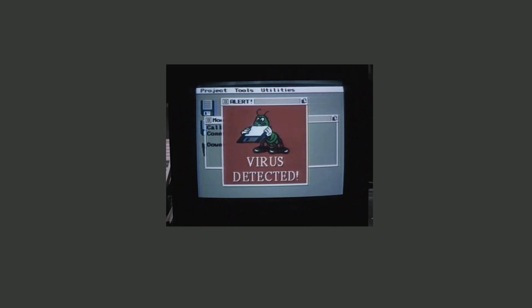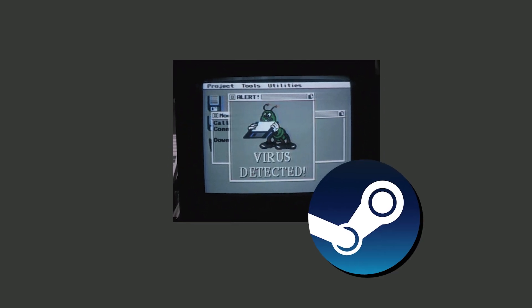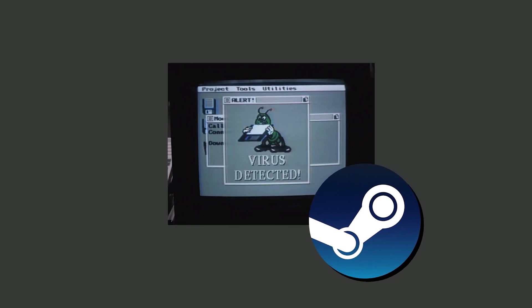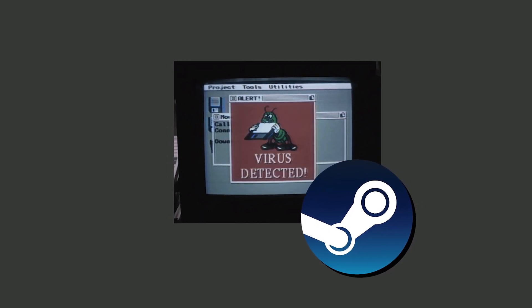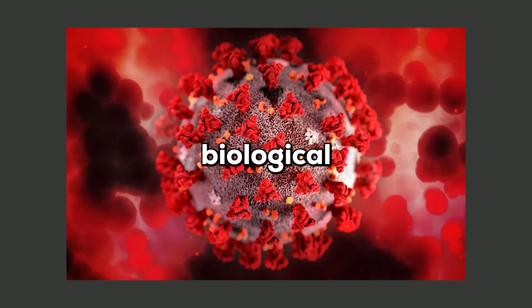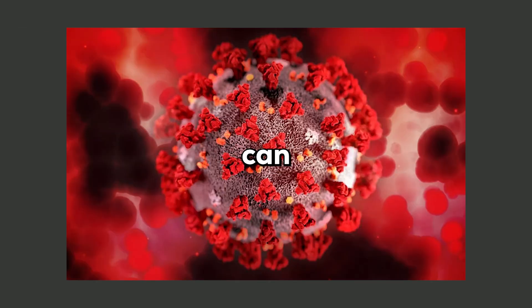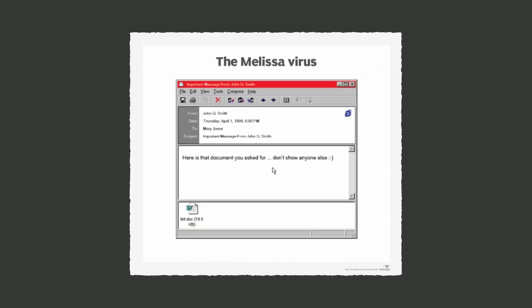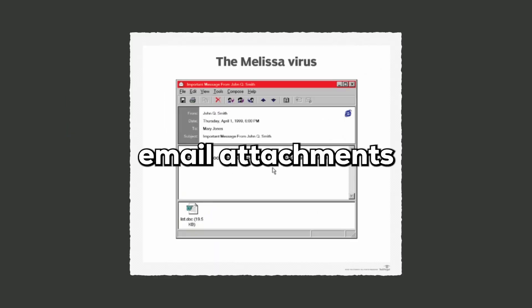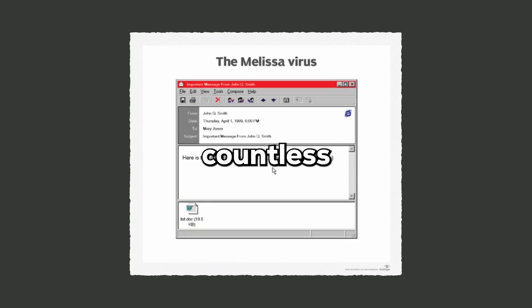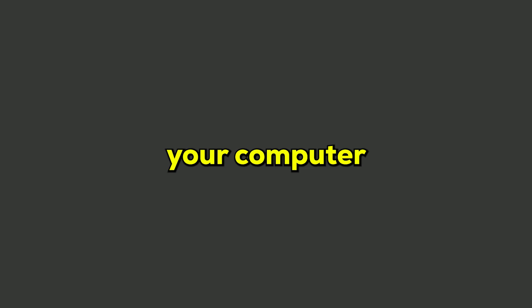Virus. A computer virus attaches itself to legitimate programs and spreads when those programs are executed, often corrupting files and data in the process. Like biological viruses, they rely on host programs to propagate and can wreak havoc on infected systems. The Melissa virus, which spread via email attachments and infected countless documents, is a classic example. Did you ever get a virus on your computer? Comment your story on how you got it.